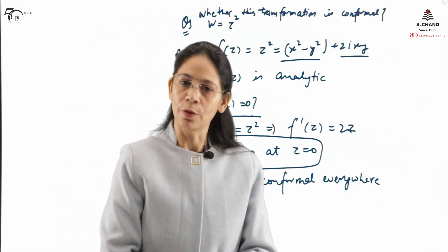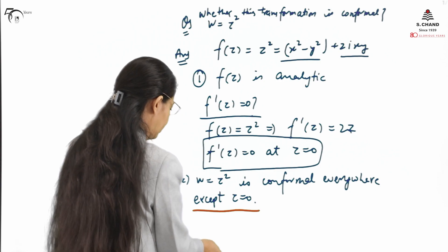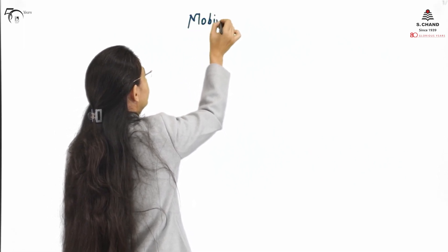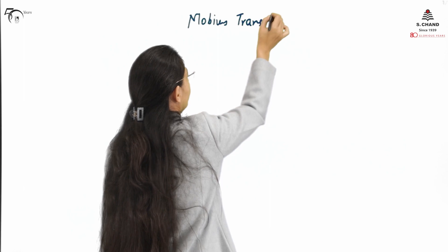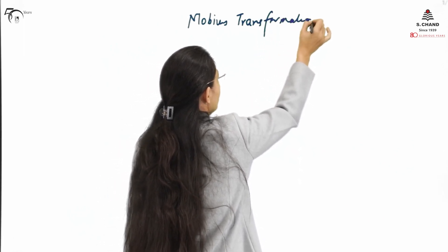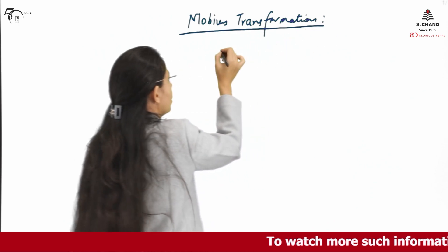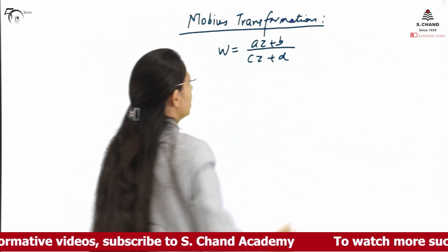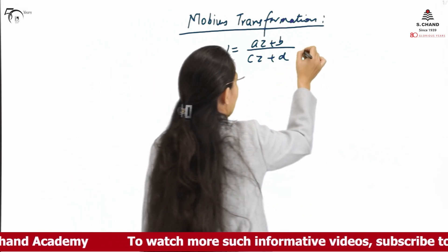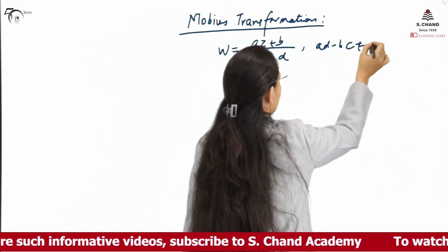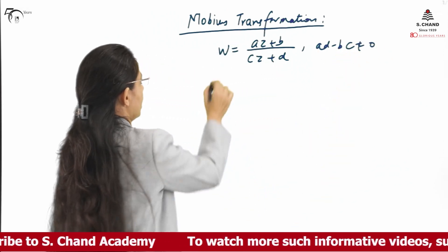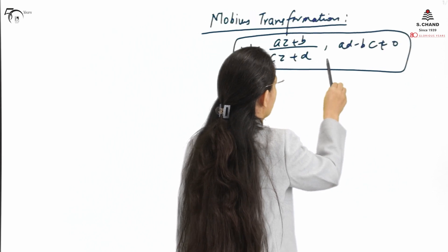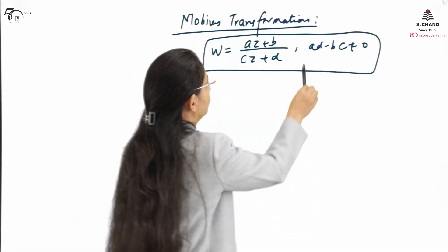Next in the row is the Mobius transformation. The Mobius transformation is defined as W equals (aZ plus b) divided by (cZ plus d), and it is said to be a Mobius transformation if ad minus bc is not equal to zero. This condition — that ad minus bc must not be zero — must be satisfied for the transformation to qualify as a Mobius transformation.